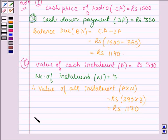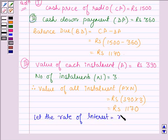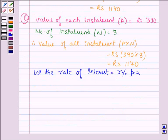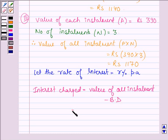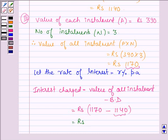Now, let the rate of interest be R% per annum. Therefore, the interest charged is given by the value of all the installments minus the balance due, and this is equal to Rs. 1170 minus Rs. 1140, which is the balance due, and this is further equal to Rs. 30.